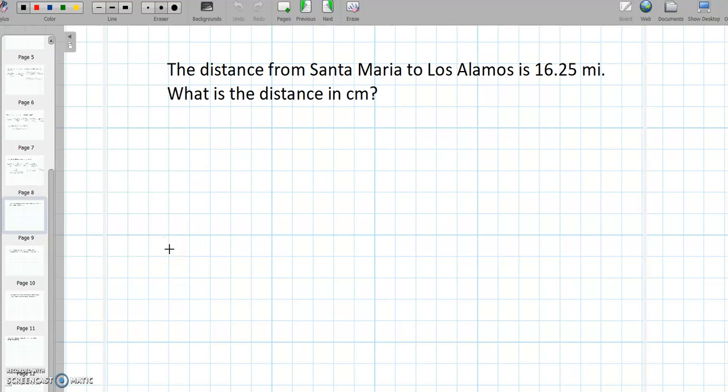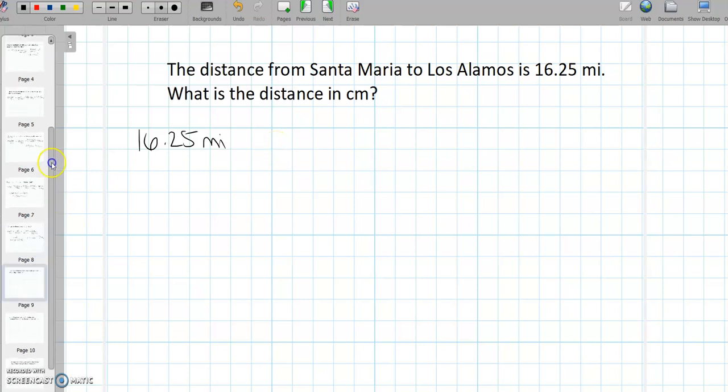All right, so next one. The distance from Santa Maria to Los Alamos is 16.25 miles. What is the distance in centimeters? Oh, this is a toughie. Okay, so 16.25 miles is what we are given and now we are asked to convert it into centimeters. So you might be asking, how do we even begin to do that? Well, let's go look at our conversion tables and see what there is to see.